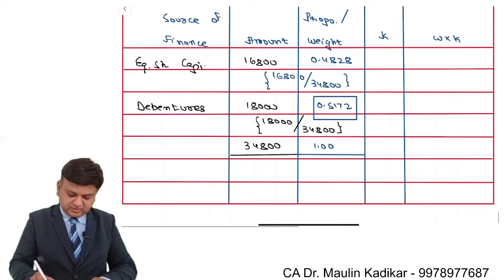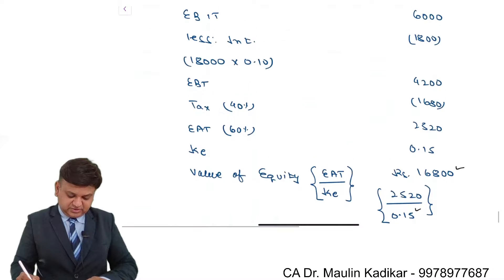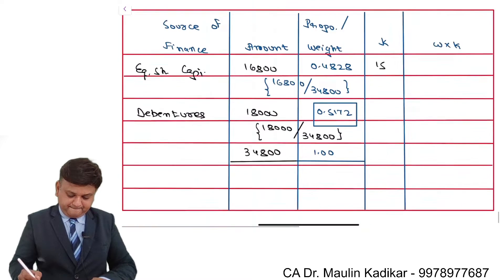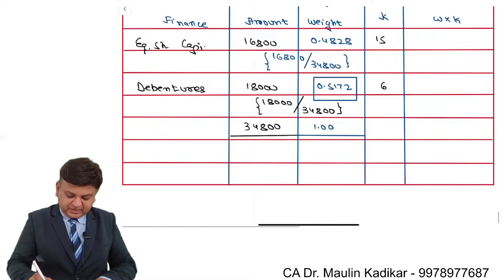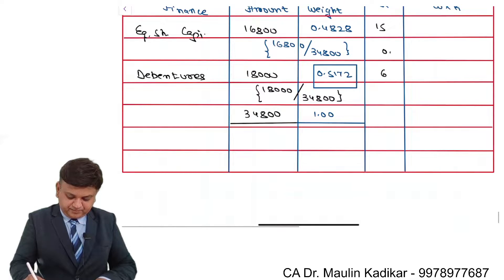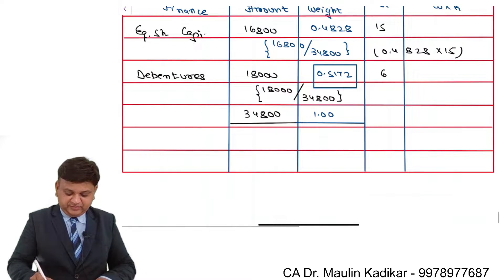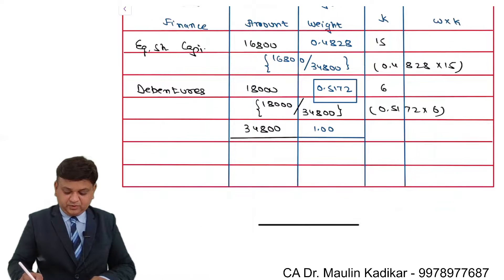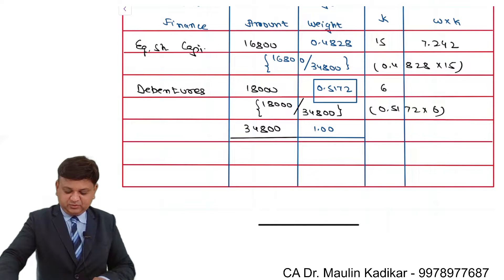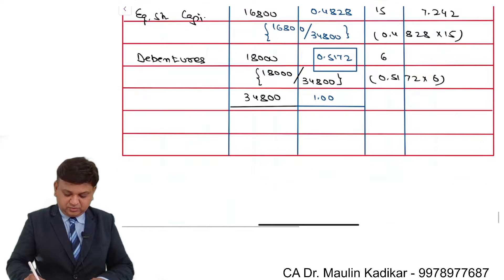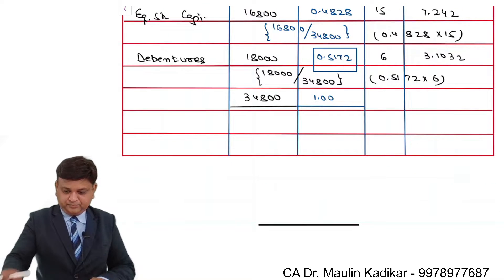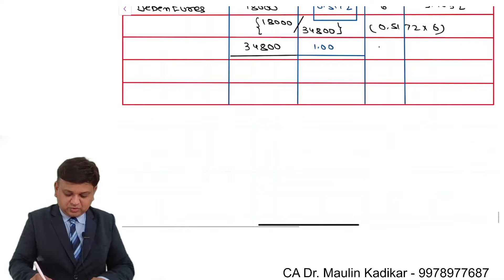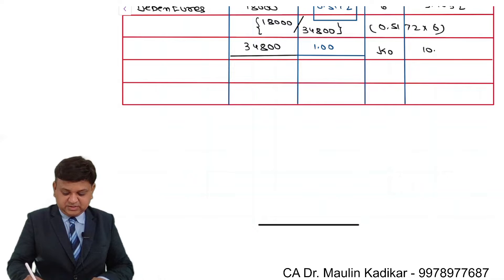Cost of equity is 15% and cost of debenture is 6%. So 0.4828 into 15 gives 7.242, and 0.5172 into 6 gives 3.1032. That is the way the weighted average or overall cost of capital is found — it is 10.3452.